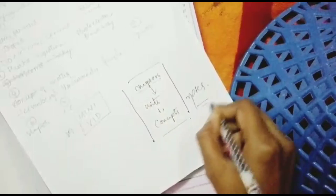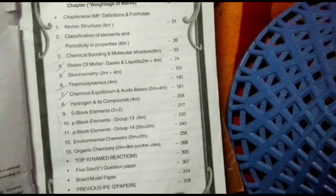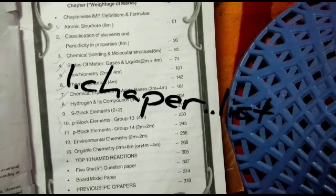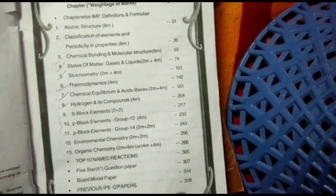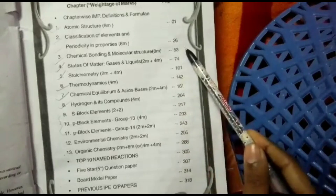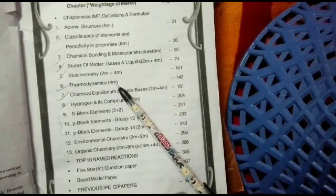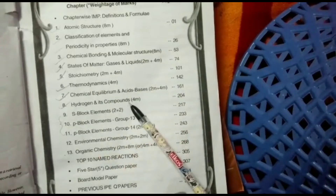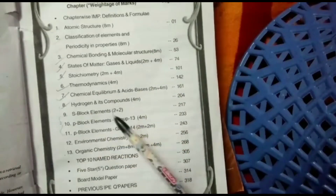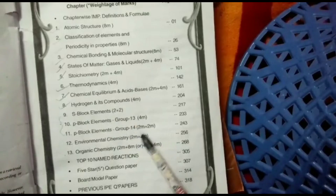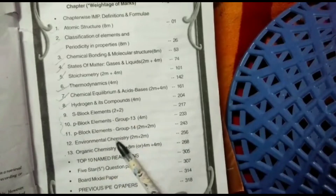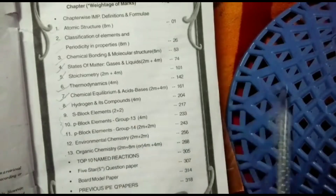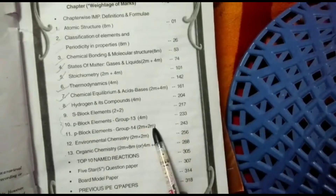Firstly, I provide the index of the chemistry textbook. These are the 13 chapters: Atomic Structure, Classification of Elements, Chemical Bonding, States of Matter, Stoichiometry, Thermodynamics, Chemical Equilibrium, Hydrogen and its Compounds, S Block Elements, P Block Elements (13 and 14), Environmental Chemistry, and Organic Chemistry. I also provide how many marks are allotted for each chapter.